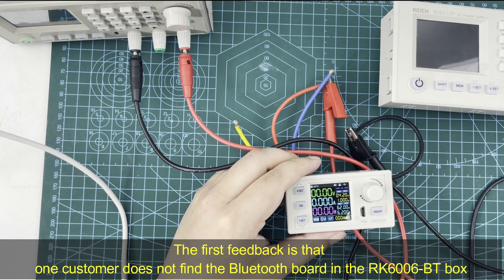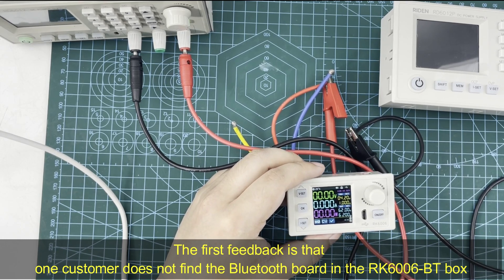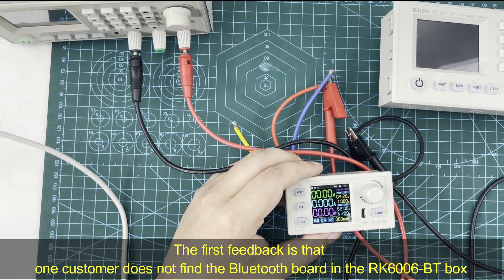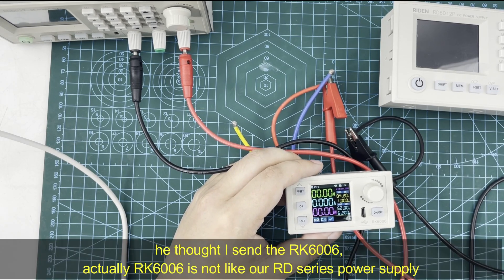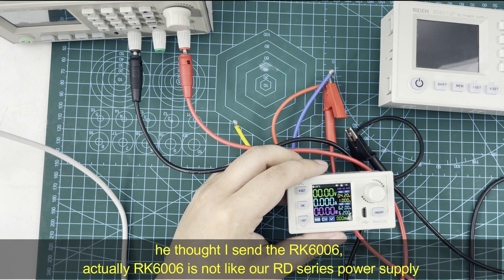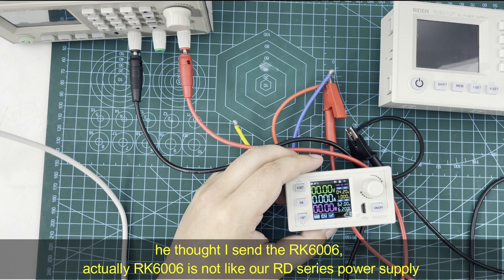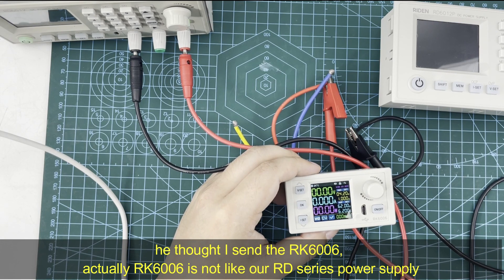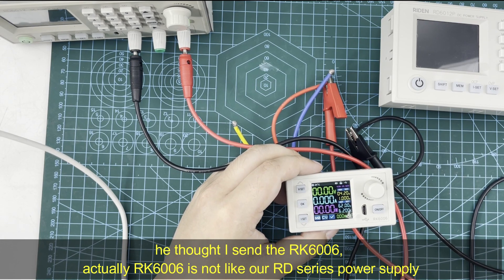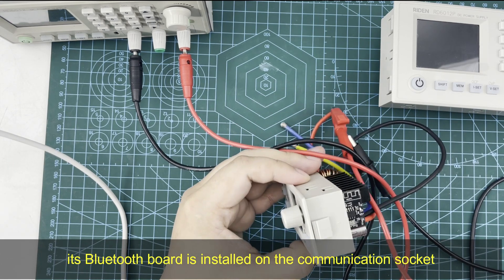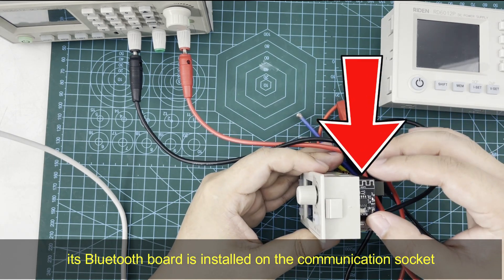The first feedback is that one customer does not find the Bluetooth board in the RK6806BT box. He thought I sent the RK6806 USB version. RK series power supply is not like our RD series power supply. Its Bluetooth board is installed on the communication socket directly.